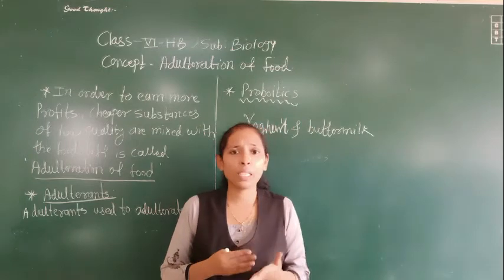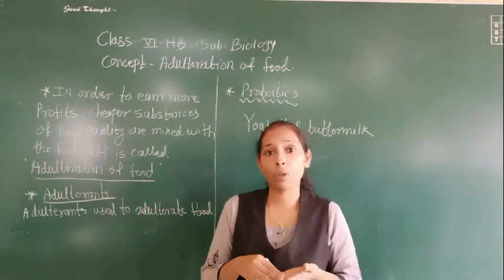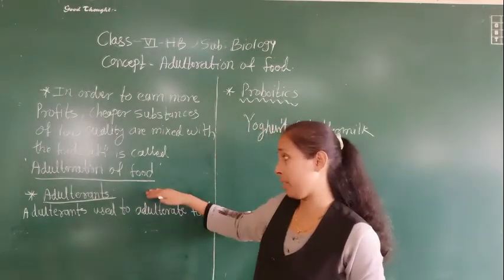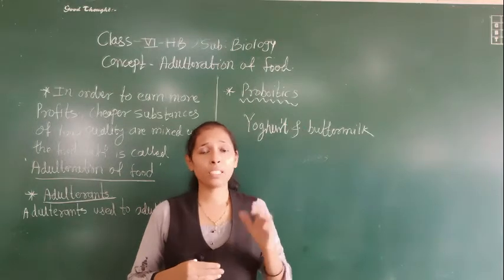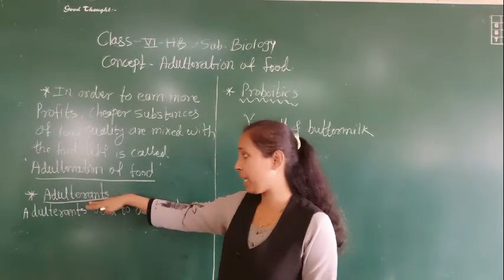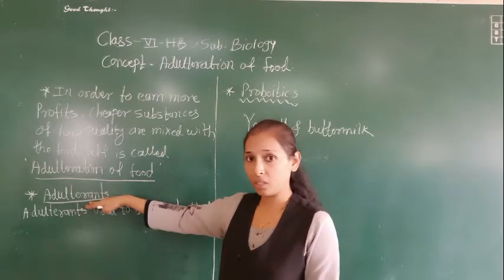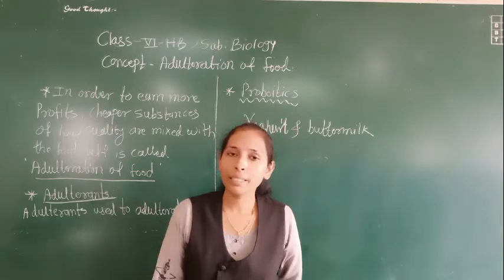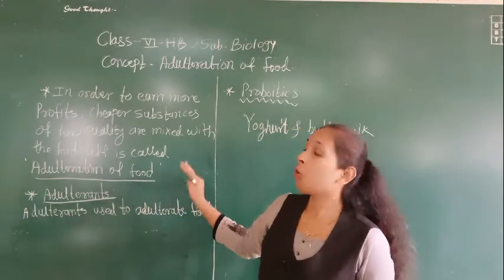In this way there are so many things — for example, in turmeric they are adding certain yellow color powders, so turmeric is also getting adulterated. So many things make different food stuff adulterated, and the substances which a person adds to make the food adulterated are called adulterants. This is about adulteration of food.